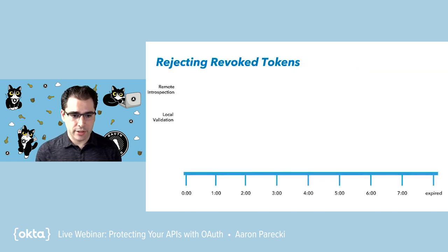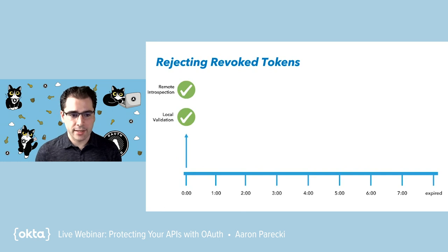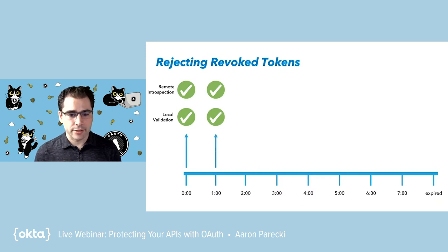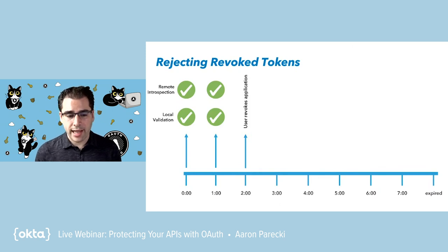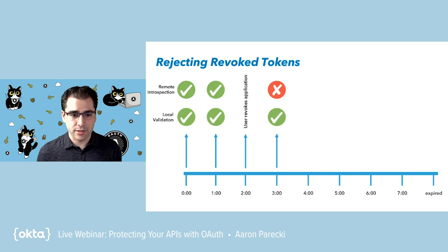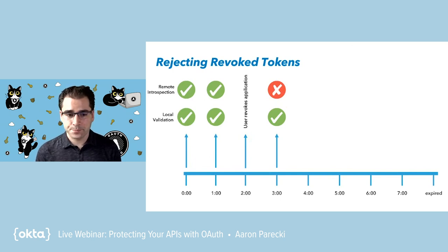What that means is that depending on whether the API is doing fast local validation or remote slow but strong validation, you might actually get different answers as to whether an access token is valid. Let's walk through this example. At time zero, you log into an application, it gets an access token, you send an API request — the API does local validation (says yes, valid) and then remote introspection — the OAuth server also says yes. An hour goes by — same thing; this token lasts for eight hours. Two hours go by, and then the user goes in and revokes this application's access. Now at hour three, when the application makes an API request, local validation still passes because as far as the JSON Web Token is concerned, the expiration date is still in the future. But if you were to do remote introspection, the OAuth server would say: no, that access token is not valid anymore because the user revoked the application. Now you've got different answers all the way up until the access token expires.